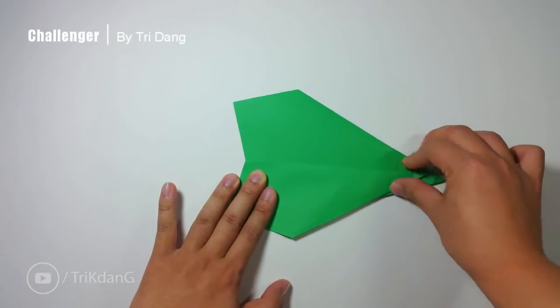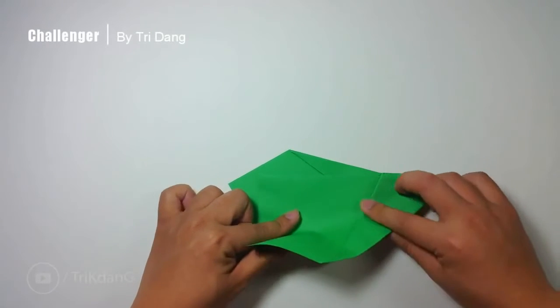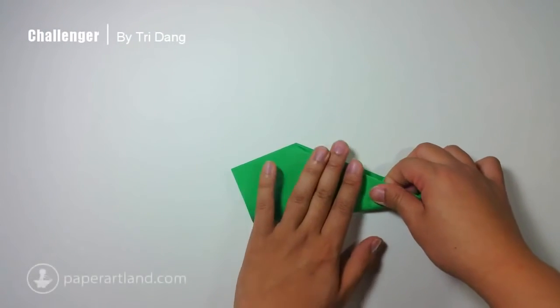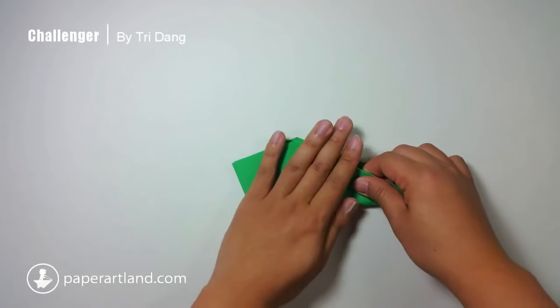And repeat the same fold for the opposite side. Turn the paper over, and fold this layer of the paper down to create the wings.